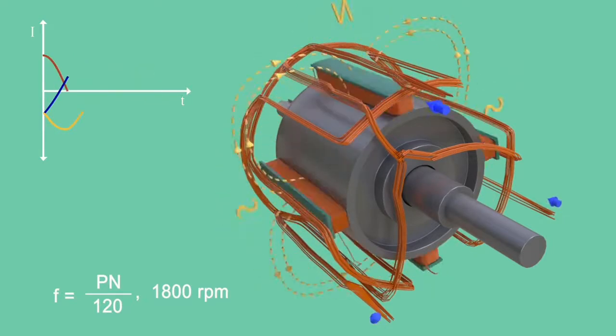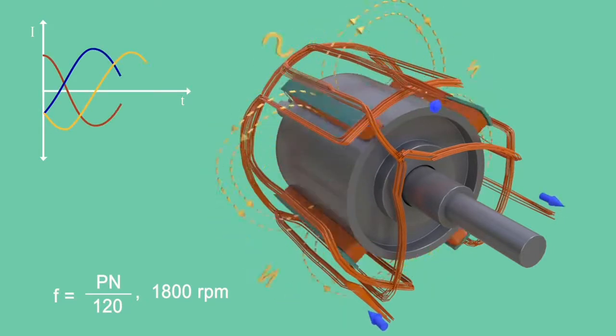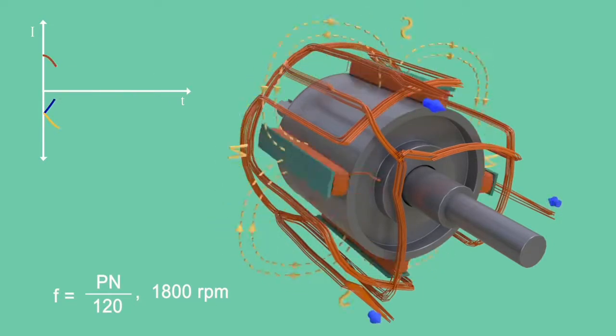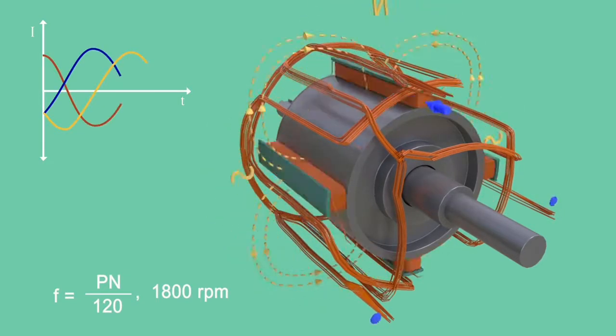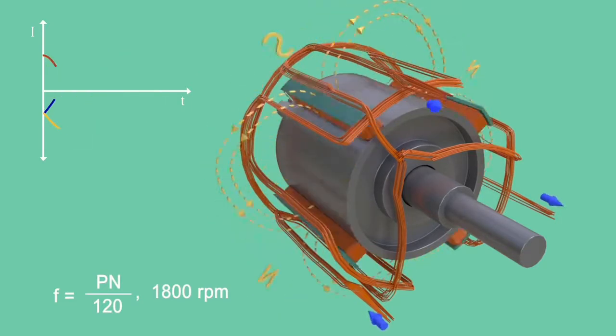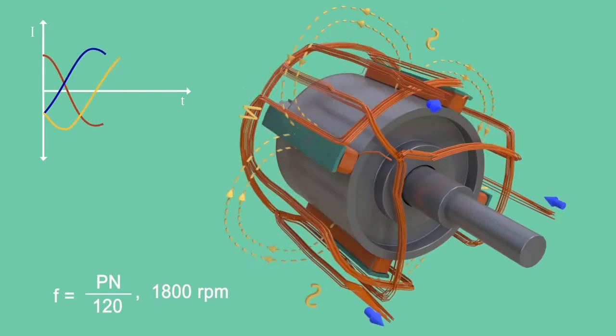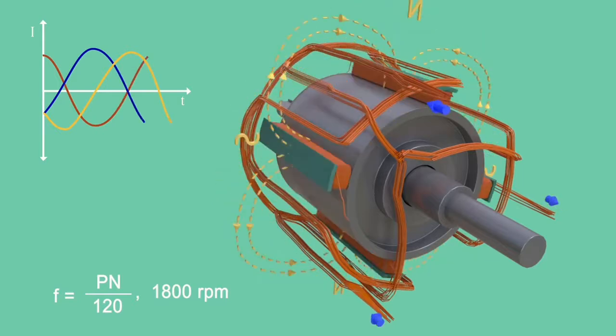So salient pole rotors are generally having 10 to 40 poles which demands lower RPM. Salient pole rotors are used when the prime mover rotates at relatively lower speed, 120 to 400 RPM, such as water turbines and diesel engines.